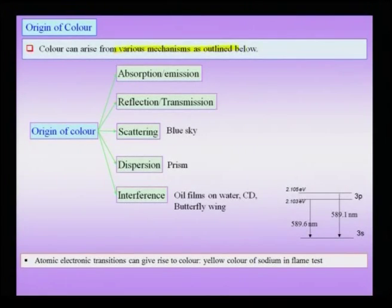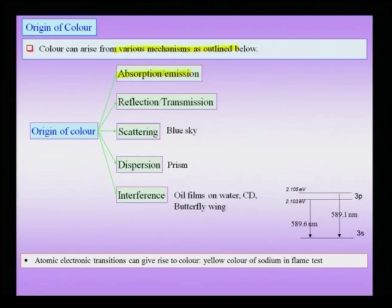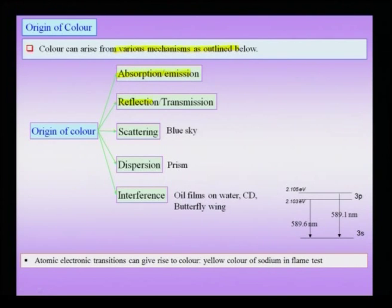Color can arise from various mechanisms. The most common is absorption or emission colors: some part of the electromagnetic spectrum is absorbed, the remaining is transmitted and you see a certain color, or the remaining is reflected giving reflection colors. Absorption may be followed by emission, which can also give rise to colors. We will take up absorption and emission colors in nanoparticles especially.